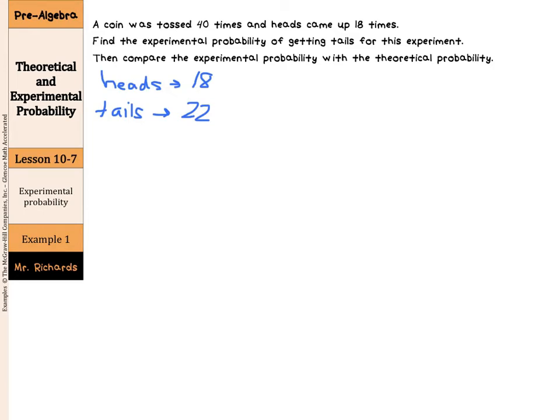If tails occurred 22 times, this occurred 22 out of 40 times, which simplifies into 11 out of 20 times, which for the experimental probability is 55%.